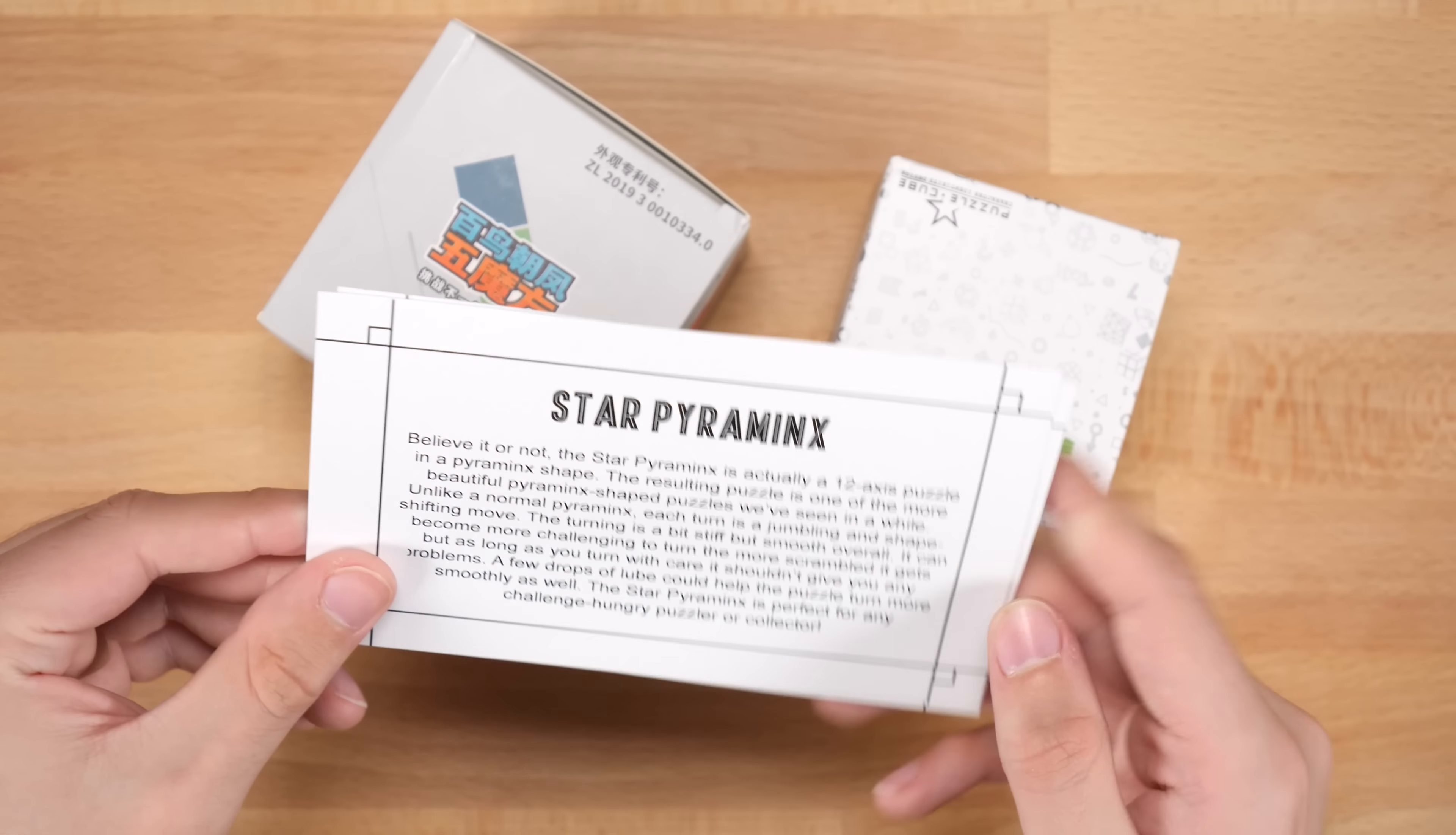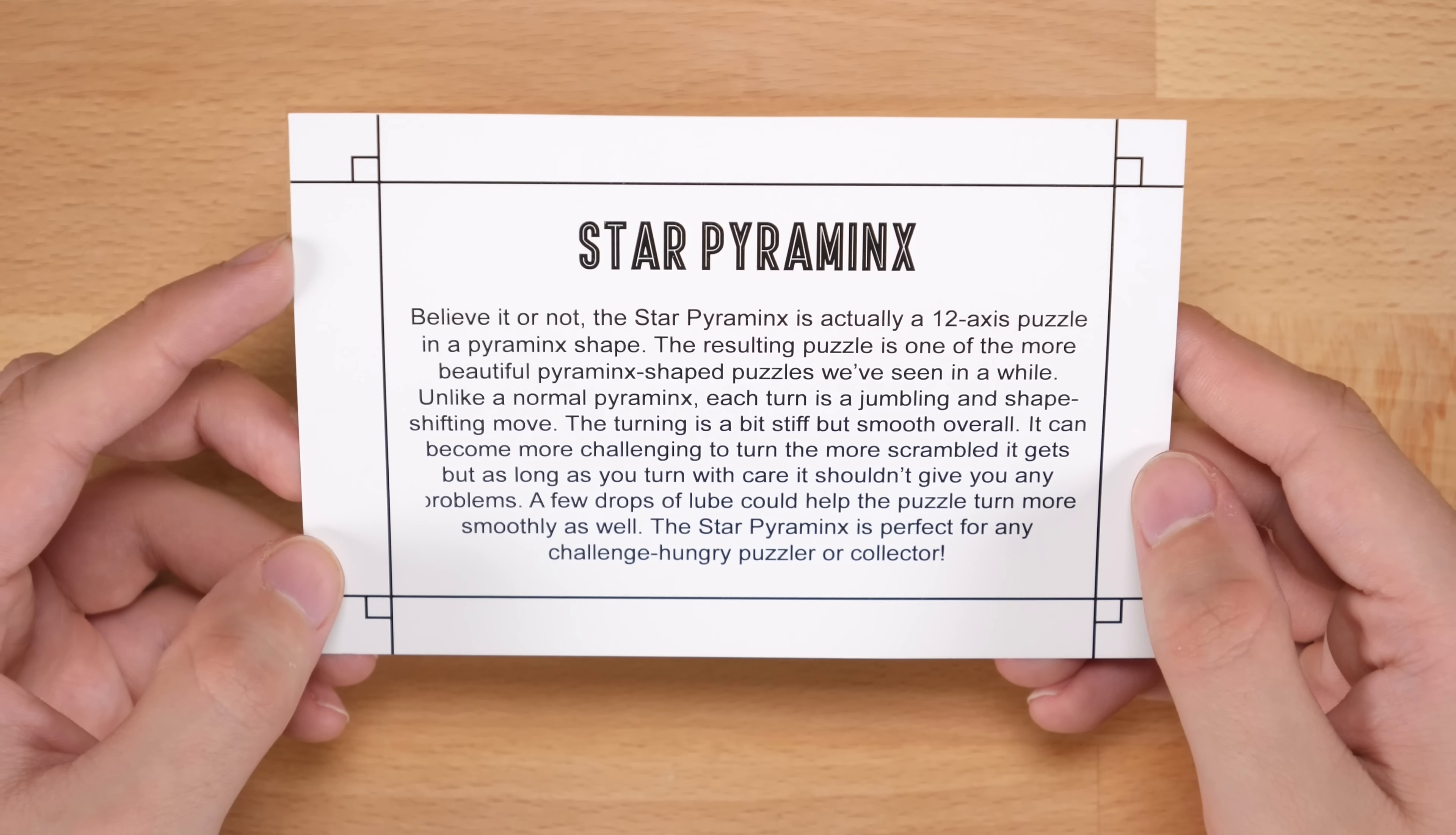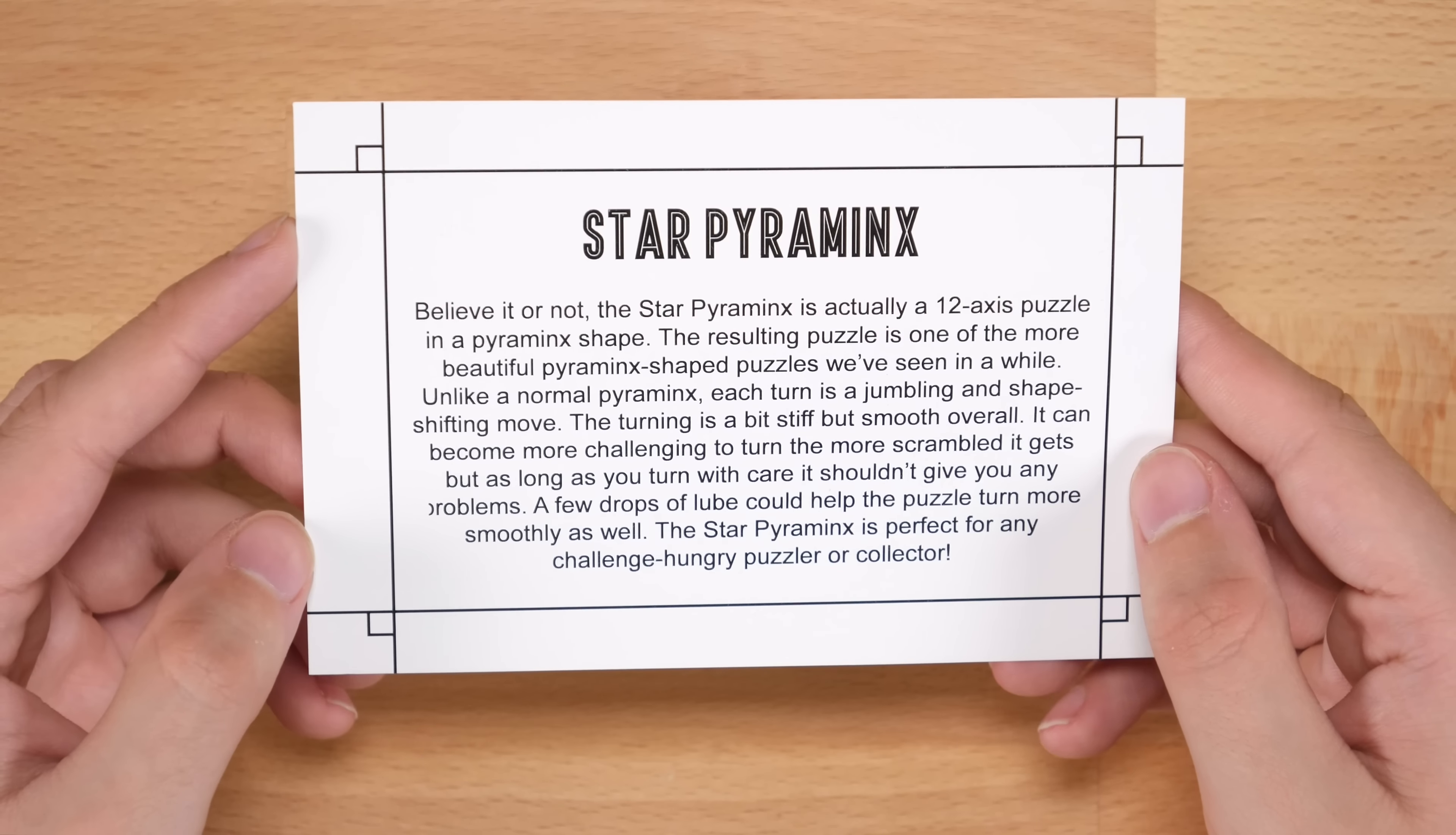The card says: Believe it or not, the Star Pyraminx is actually a 12-axis puzzle in a pyraminx shape. The resulting puzzle is one of the more beautiful pyraminx-shaped puzzles we've seen in a while. Unlike a normal pyraminx, each turn is a jumbling and shape-shifting move. The turning is a bit stiff but smooth overall. It can become more challenging to turn the more scrambled it gets, but as long as you turn with care it shouldn't give you any problems. A few drops of lube could help the puzzle turn more smoothly as well. The Star Pyraminx is perfect for any challenge-hungry puzzler or collector.